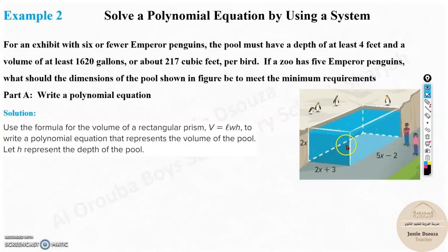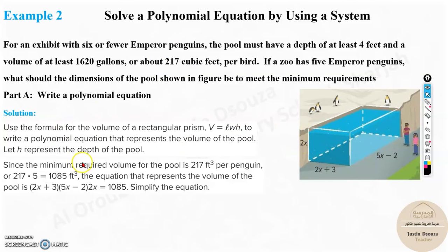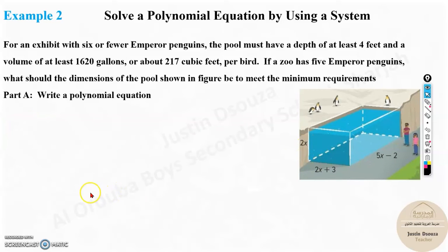So now you have five birds with you. What would you do? You need to multiply. When you multiply this, five times 217, what's going to happen? Before that, volume is basically all the dimensions must be multiplied. Since they have told five emperor penguins, it must be 217 into 5, that is 1,085 feet cube. After that, the equation represents the volume. And what is the total volume? We can just easily solve it. The equation over here is 2x + 3 times 5x - 2 times 2x, that is equal to 1,085 feet cube.